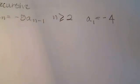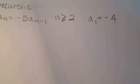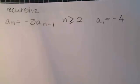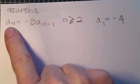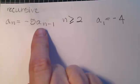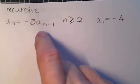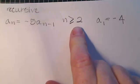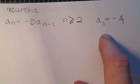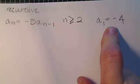A recursive sequence is identified as the current term is determined using the previous term. In this example, my lowest value for n is 2, and my starting value for a sub 1 is negative 4.